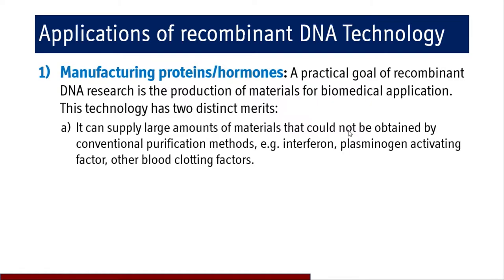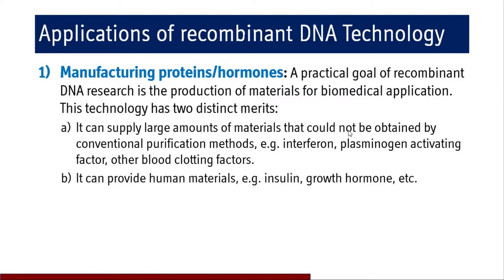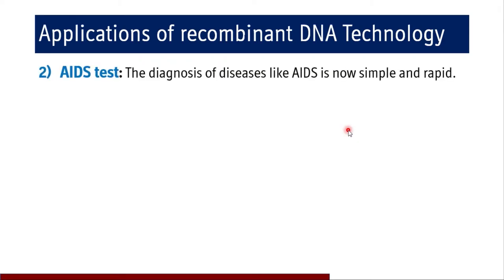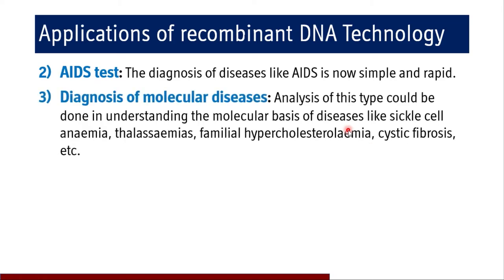Other blood clotting factors can be synthesized with recombinant DNA technology, creating a revolution in healthcare. It can also provide human materials — insulin was the first hormone synthesized by recombinant DNA technology, followed by growth hormones and other therapeutic agents. For diagnostics, the diagnosis of diseases like AIDS and hepatitis is now simple and rapid, and COVID-19 diagnosis relies heavily on recombinant DNA technology and PCR technique.